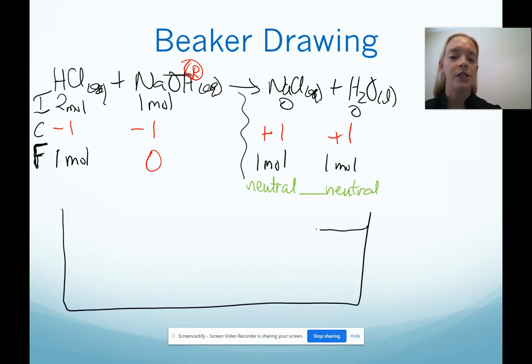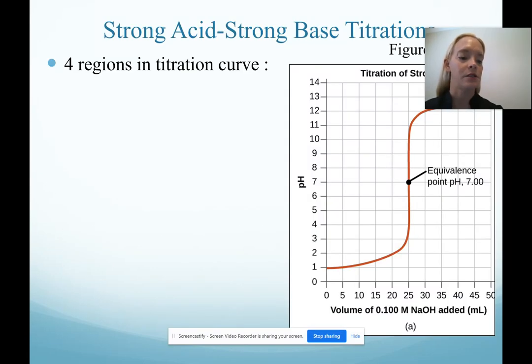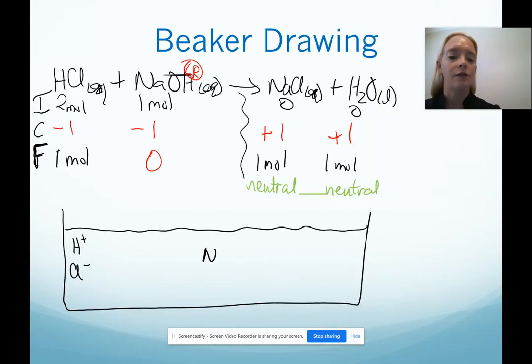To draw this solution in a beaker then, my resulting solution I have one mole of HCl, which as a strong acid we know completely dissociates. And then we have our one mole of NaCl and one mole of H2O.